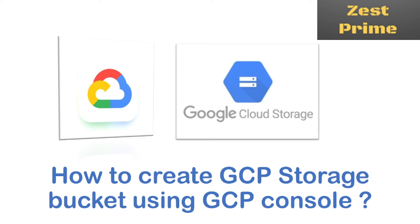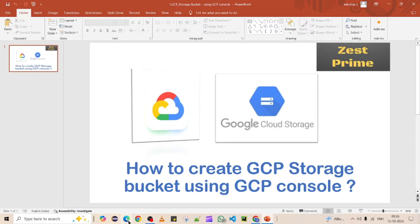Hello, welcome to Just Prime. As part of this video, we are going to see how to create a storage bucket in GCP. There are different ways to create a storage bucket: one is using the GCP console directly, which is a GUI; the second approach uses a command window provided by GCP itself; and the third is using automation tools. Today we are going to see the first one — using the GCP console.